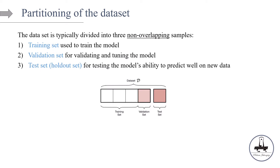To understand the concepts of cross-validation, we need to first review some basic definitions. For example, what do we mean by partitioning of the data set? The data set is typically divided into three non-overlapping samples. Imagine this is our data set D and we are going to divide it into three parts. Let's say this data set D has 100 observations. The first part is going to be roughly about 60 observations and we call it the train set. The train set is used to train the model — this is where the parameters of the model are being learned.